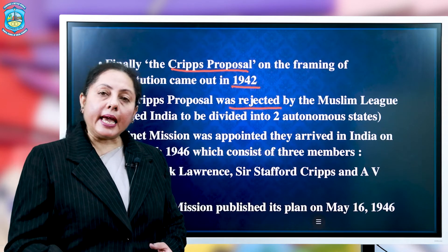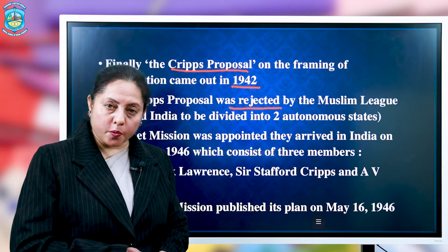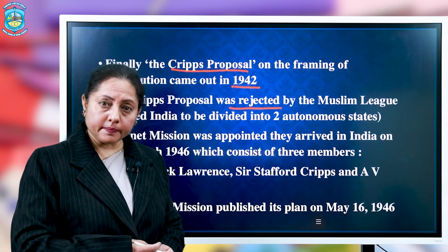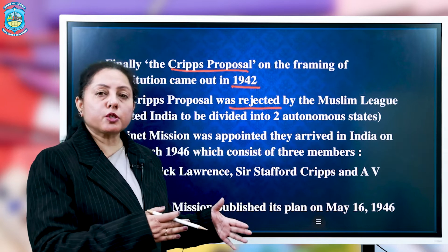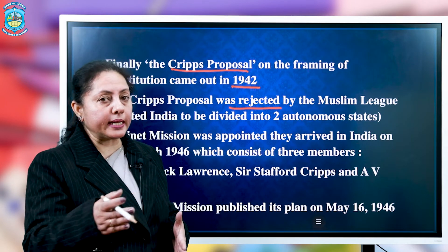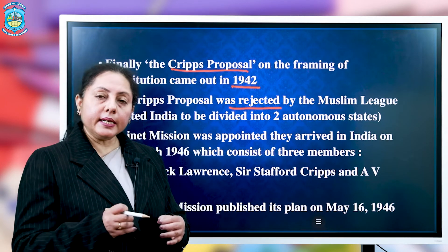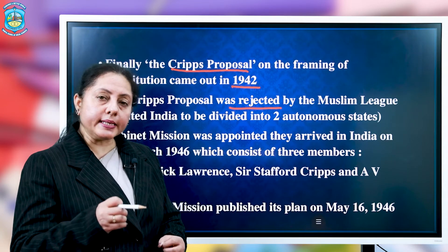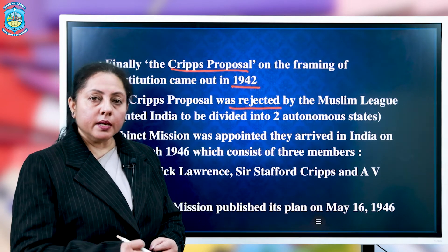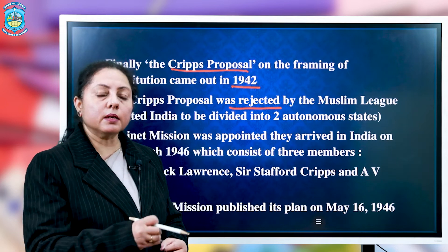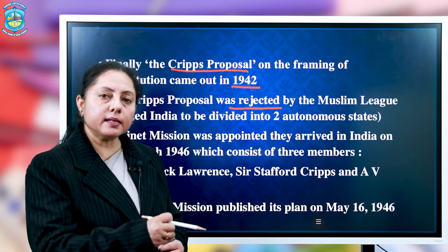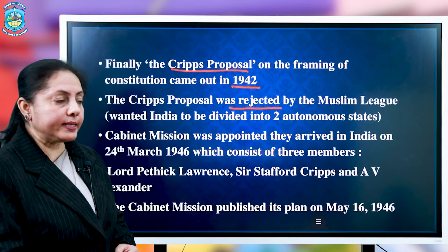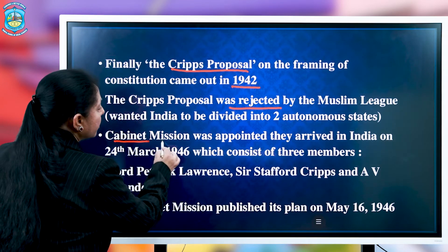After the end of the Second World War, which ended in September 1945, a new government was formed in England — the Labour Party. They took the initiative that a constituent assembly would be formed to design the constitution and the destiny of India, under which they appointed a Cabinet Mission.